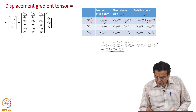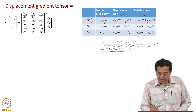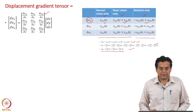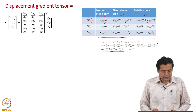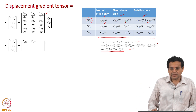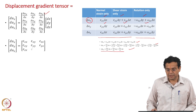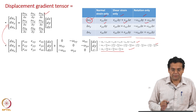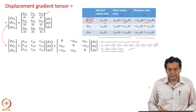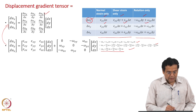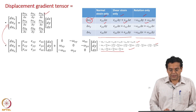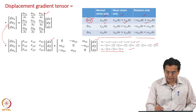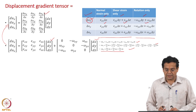Now we are not going to sum up all the components together. We are going to separately sum the normal strain and shear strain contributions and keep rotation separately, representing them in matrix form. The left-hand side is the column vector of differentials of displacement, and the right-hand side has column vectors of dx, dy, dz. We have to represent this table in the form of two matrices or two tensors.